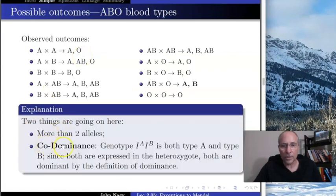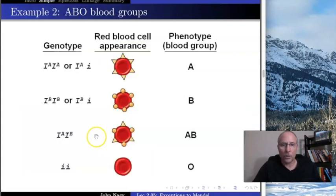And the other thing is this concept of codominance. Look at this individual here, this heterozygote, and look at these heterozygotes: the big I^A, little i, and big I^B, little i.